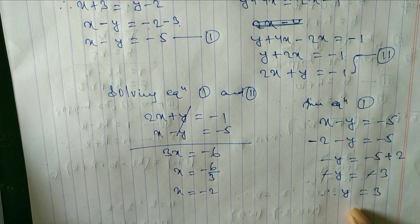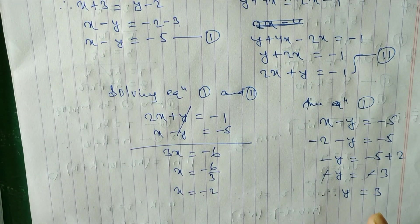So x is equal to minus 2 and y is equal to 3. That completes question 1.